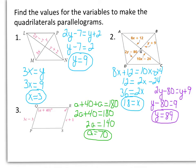To solve for C: in a parallelogram, opposite sides are congruent. So we can say 3C minus 3 equals C plus 1. Subtracting C, I have 2C minus 3 equals 1. Adding 3, we get 2C equals 4. Dividing by 2, we have C equals 2.